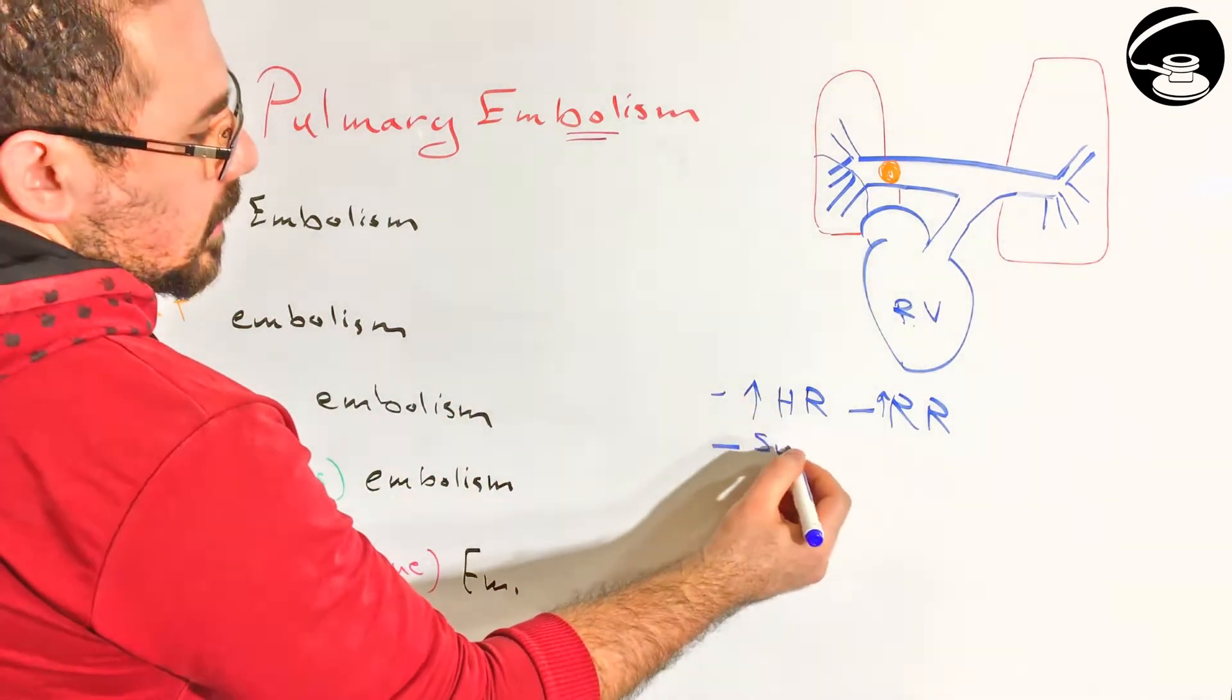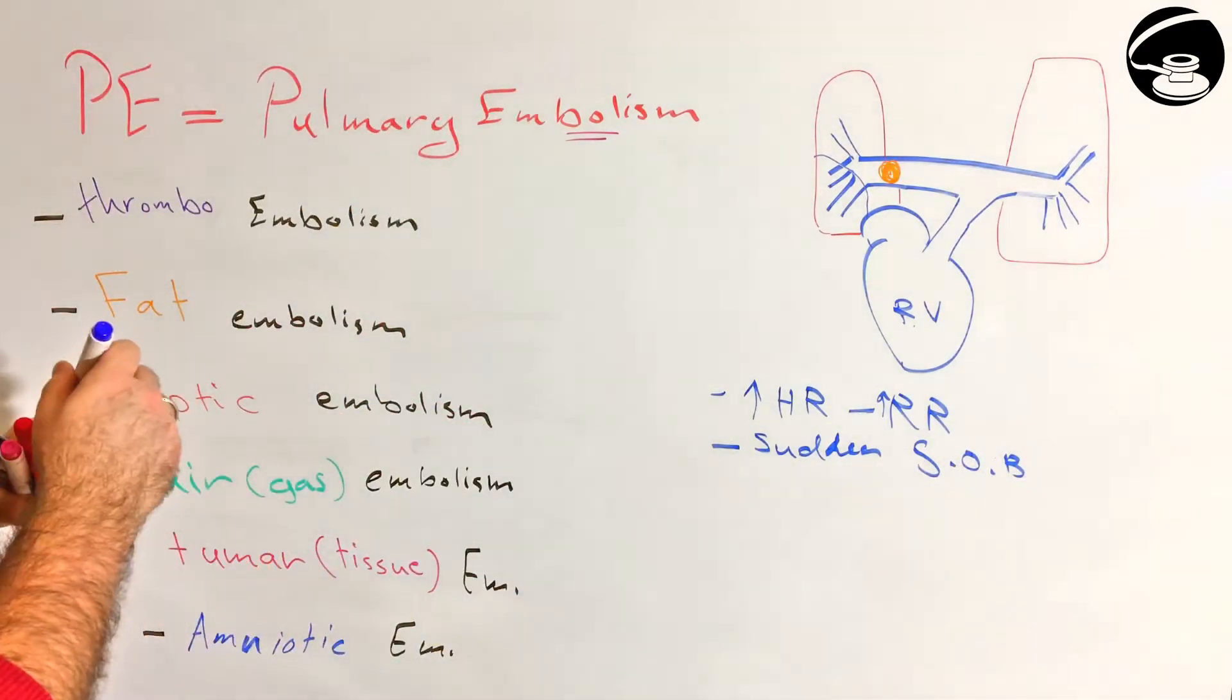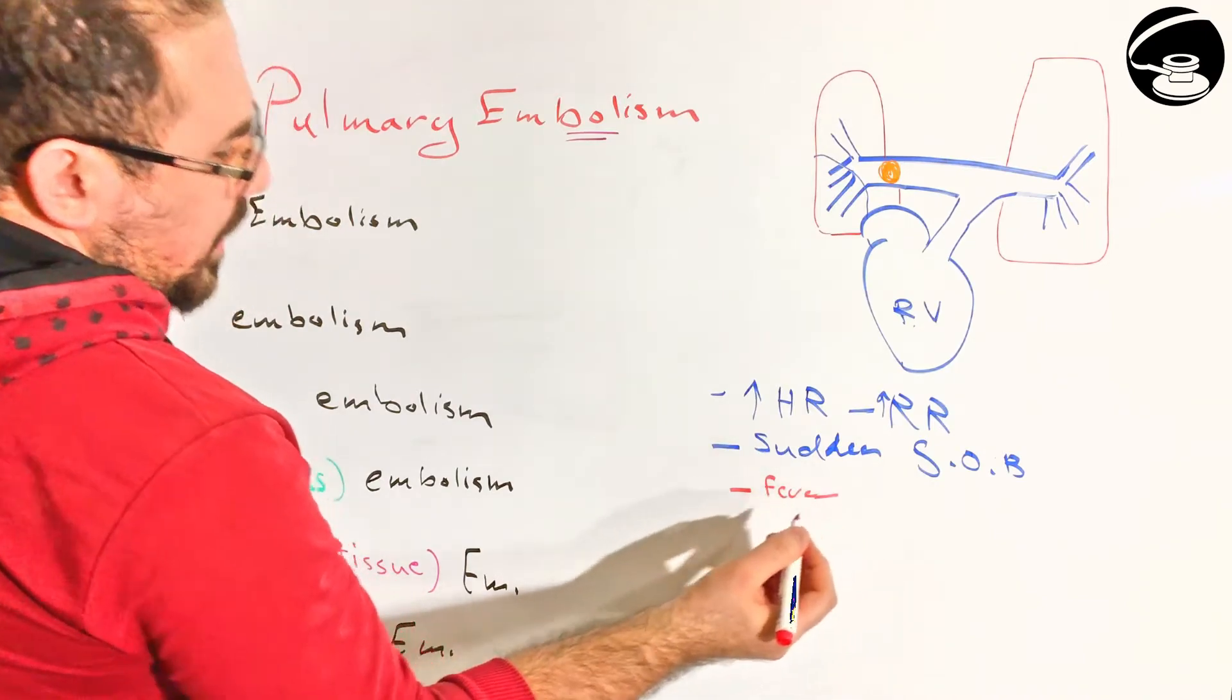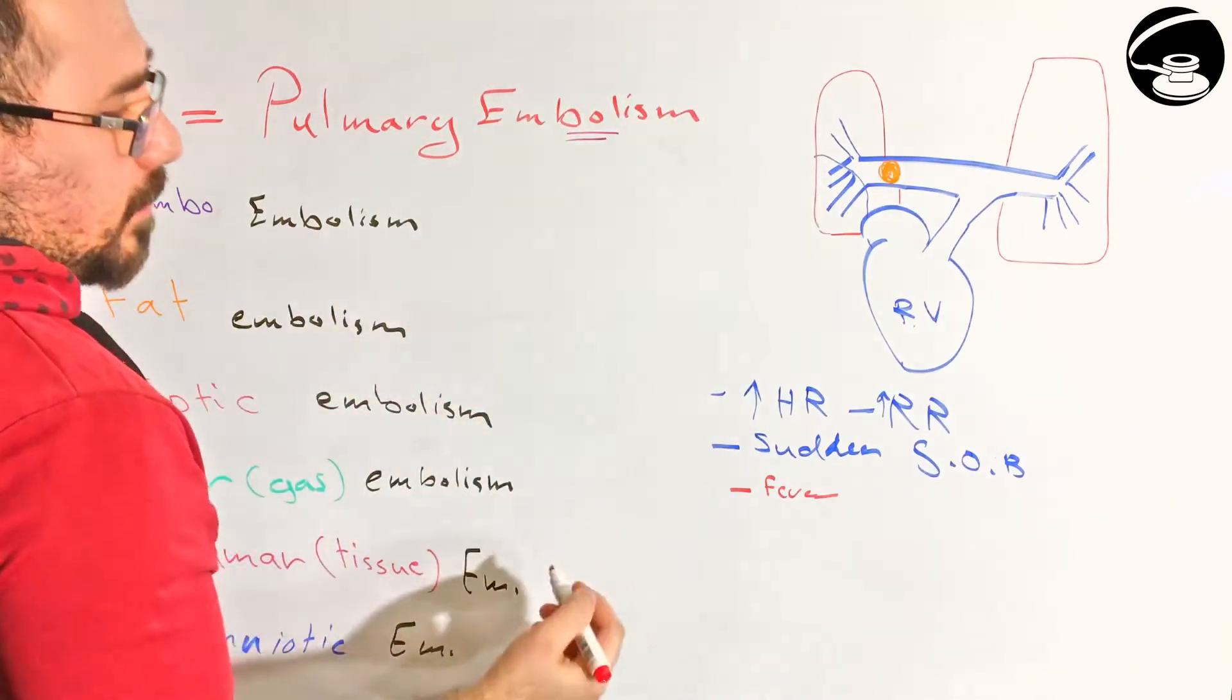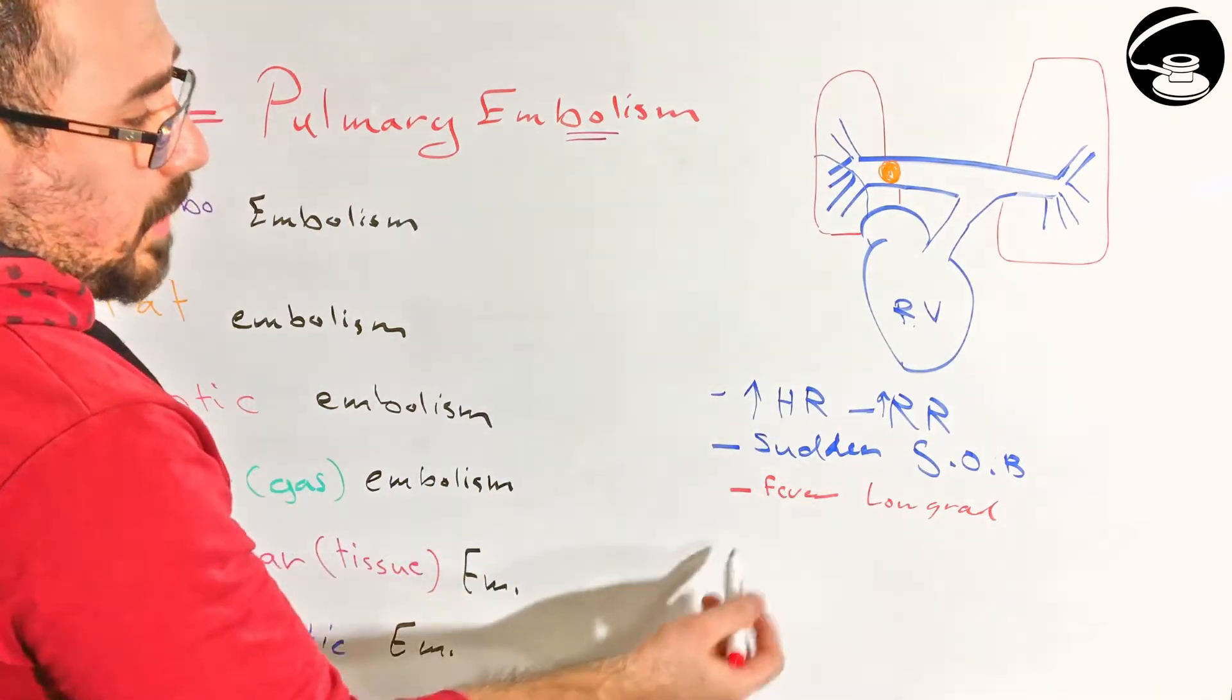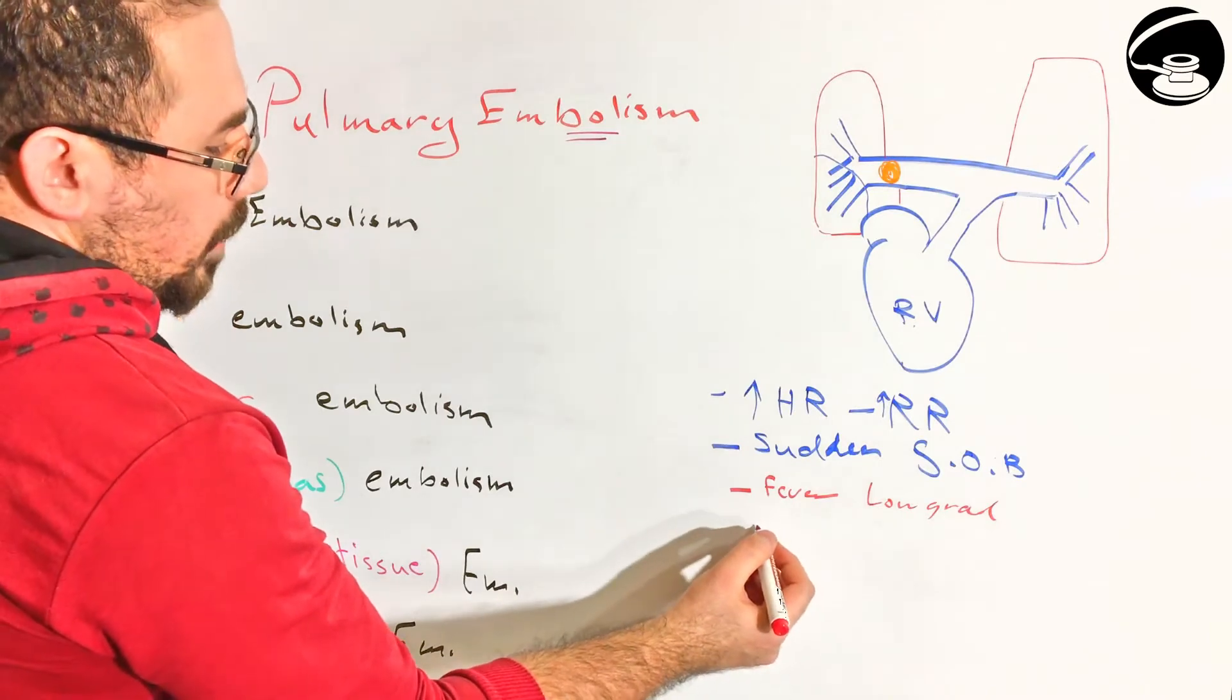When it happens, it's mostly sudden, without telling anybody. So you see sudden shortness of breath or dyspnea. All the symptoms are easy to understand. Also, you may find a fever, a low-grade fever, because this part is lacking blood and that will lead to some inflammation. If you have a low-grade fever, sudden shortness of breath, increasing heart rate, and increasing respiratory rate, you have to think about pulmonary embolism.